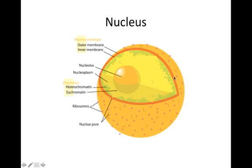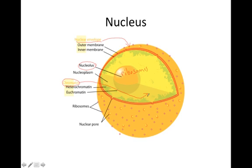Next we have the nucleus, which is found in the middle of the cell and is sometimes called the control center of the cell. The nucleus has a membrane called the nuclear envelope that keeps the nucleus separate from the cytoplasm outside. Inside the nucleus is the nucleolus, where ribosomes are made. There's also something called chromatin, which is wound up DNA — deoxyribonucleic acid — and it has the instructions for making proteins, or basically the instructions for how to run the cell. That's why the nucleus is called the control center of the cell.